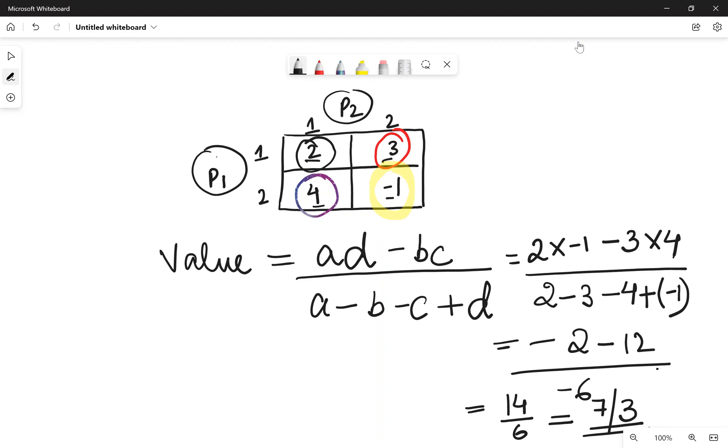So it is this simple. The value of the game is calculated using this particular formula. So whenever you get a question like find the value of the game of a 2 by 2 matrix, this is the formula which you are going to use.